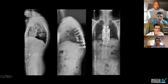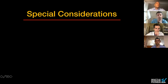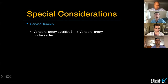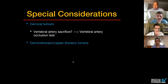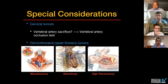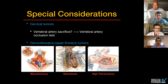Post-op radiographs showed he achieved negative margins and has been disease-free since. Special considerations in the cervical spine: if the tumor encases the vertebral artery, vertebral artery occlusion tests can assess neurologic risk, though some surgeons have sacrificed the artery without an occlusion test. Cervical-thoracic and upper thoracic tumors have unique approaches including the manubriotomy and sternotomy. Rex Marco published on a high-muscle-sparing thoracotomy to access high thoracic tumors. Dr. Moumaneni and Dr. Lockney will demonstrate the sternotomy technique later.